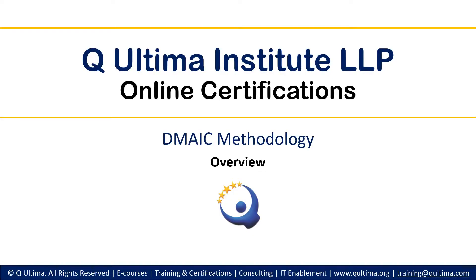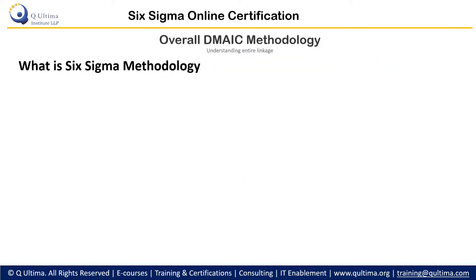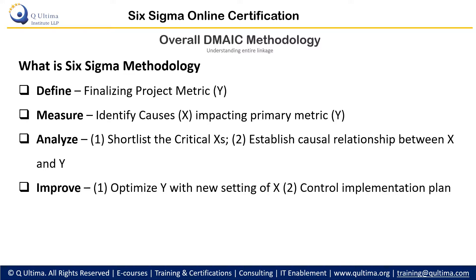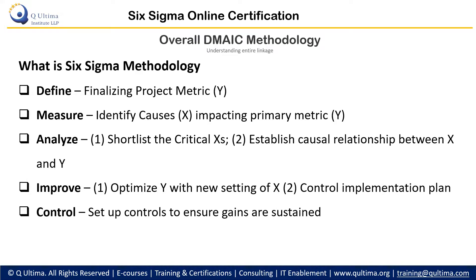Welcome to Six Sigma online certifications. We are on the topic DMAIC methodology and overview. So what is DMAIC methodology? It consists of five phases: define, measure, analyze, improve, and control. Define is basically finalizing the metric on which we are going to improve, which is called the project metric, also called project Y.